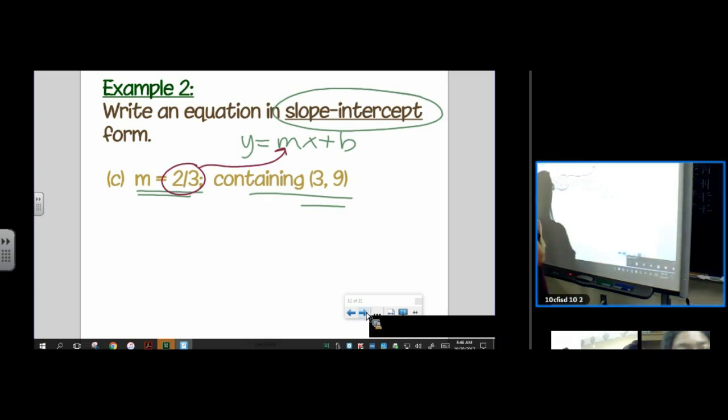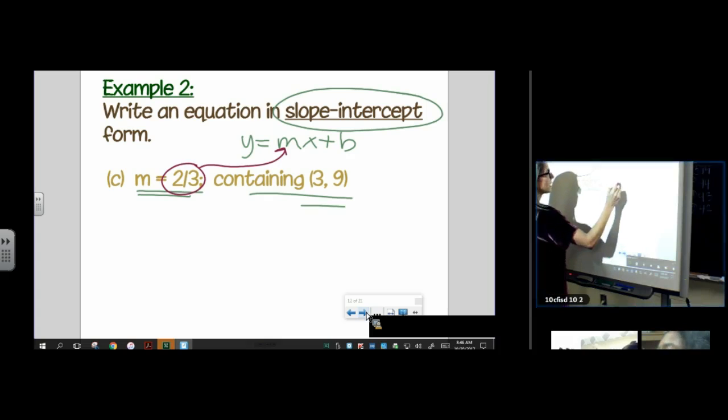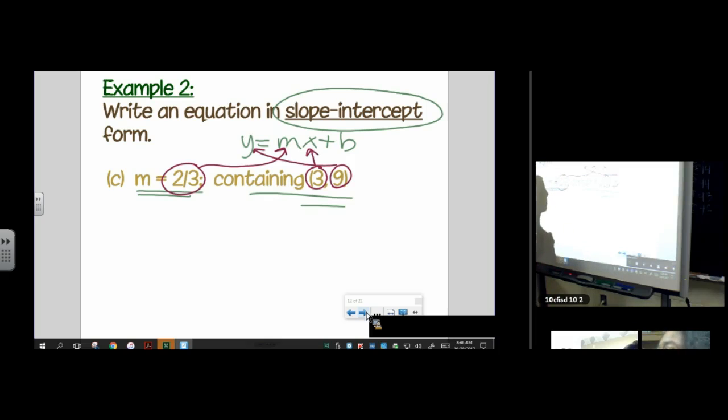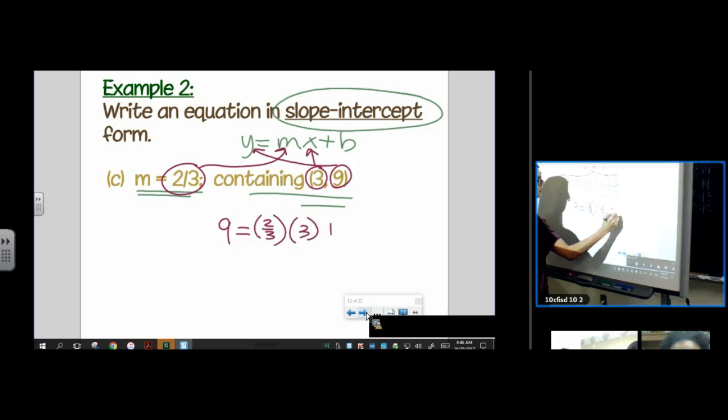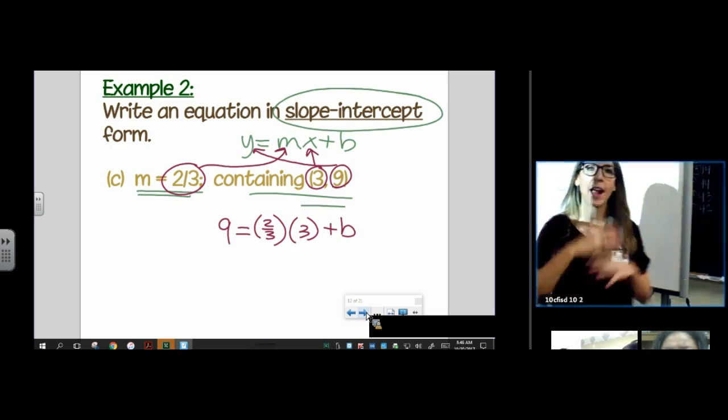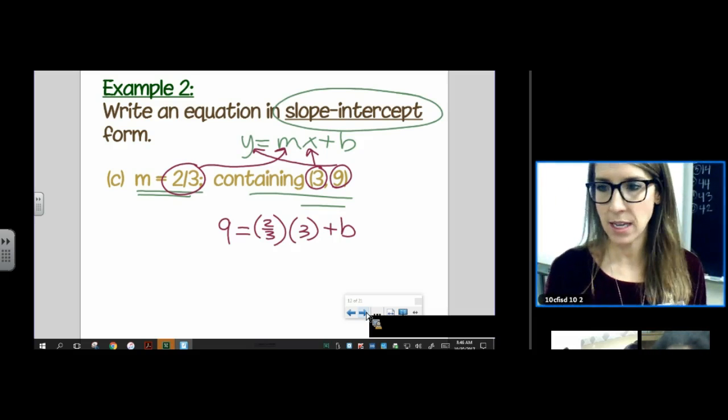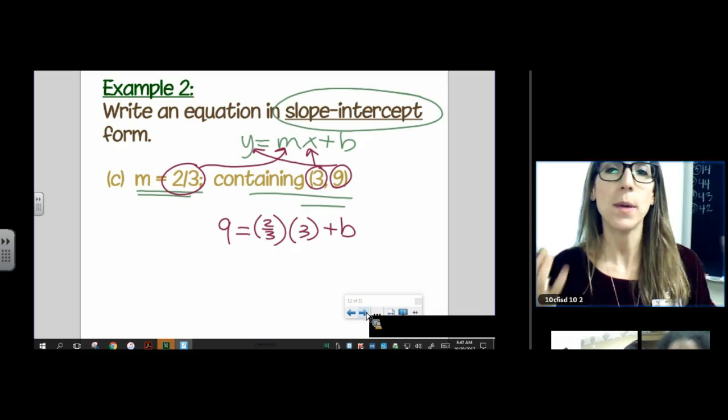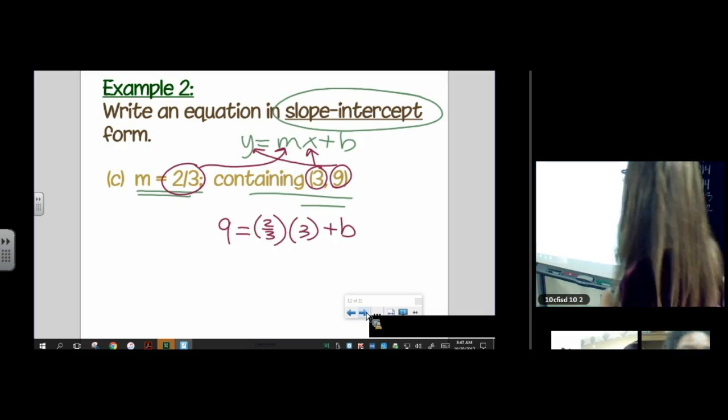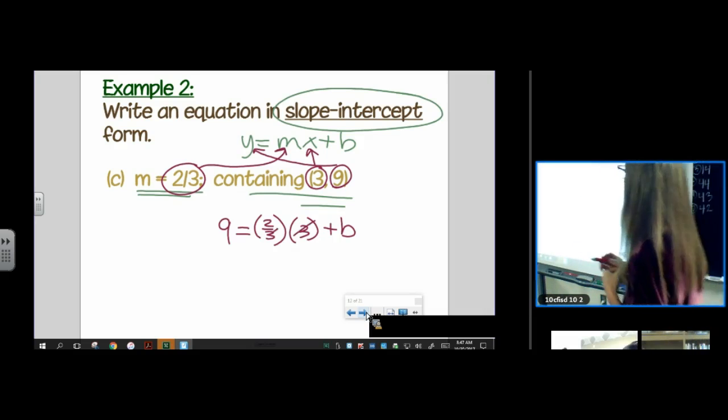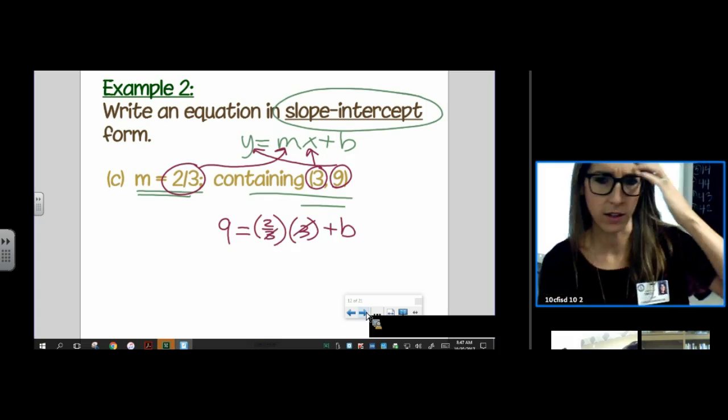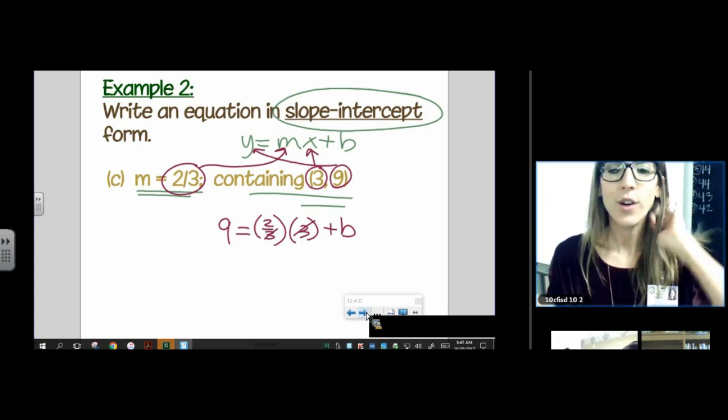So what we're going to do is take our favorite form to write an equation of a line and we're going to do some substitution. Instead of m, we're going to put two thirds. Instead of y, we're going to put nine. And instead of x, we're going to put three. We're going to plug it in. We're going to use substitution. Nine equals two thirds times three plus b. Our entire goal here is to find b. They did not give us b. They didn't give us the y-intercept. So we have to find it ourselves.